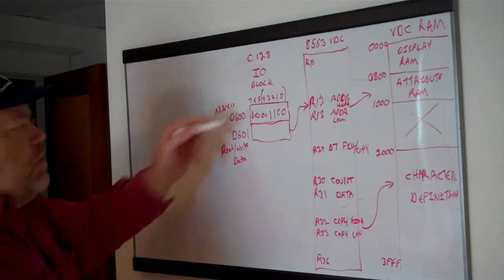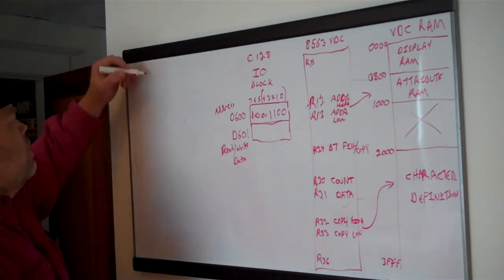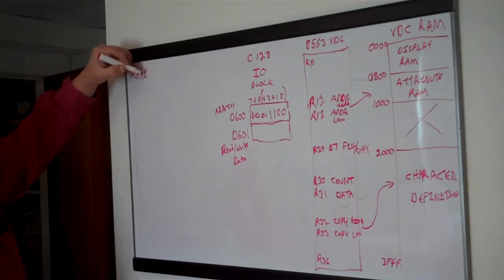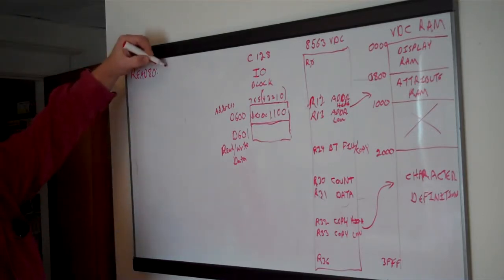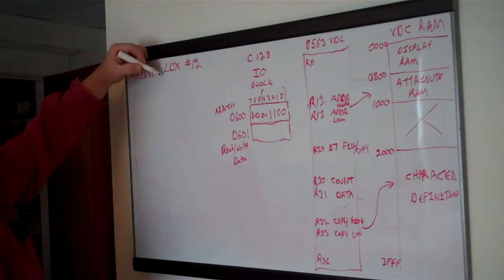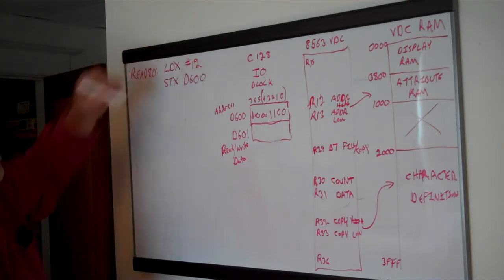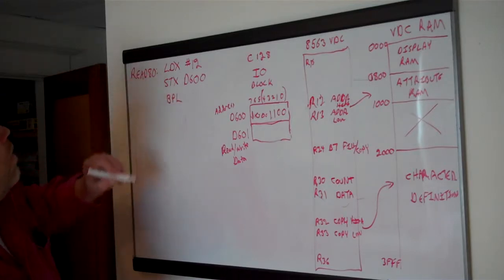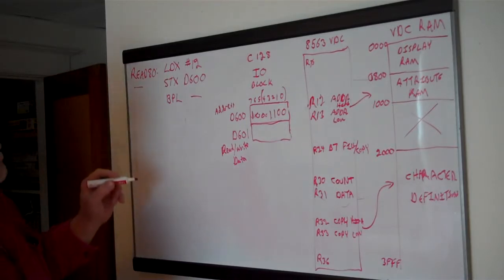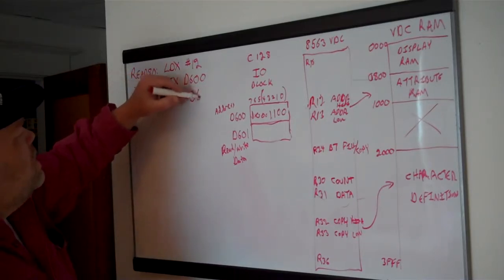You have to wait because there's no interrupt in this chip to tell you when it's ready — you just keep checking. In actual code it's pretty simple. For a routine called READ80, typically what people do is load X with the register number they want to access, then store that into D600 (the address register). Then you do a BIT on D600 and branch if plus back up to the BIT instruction.